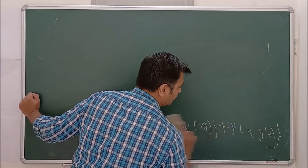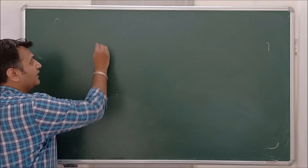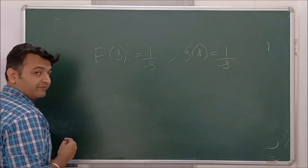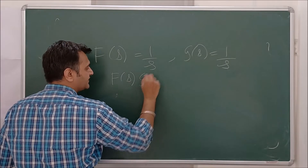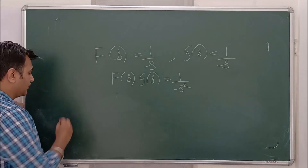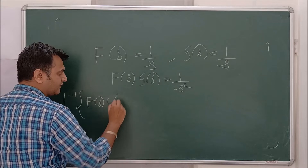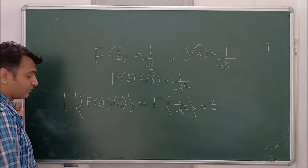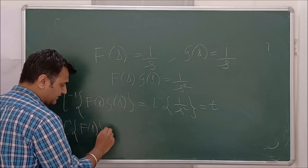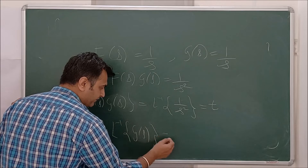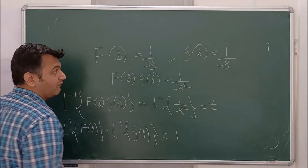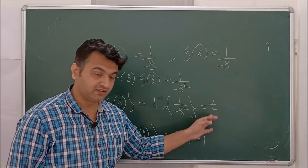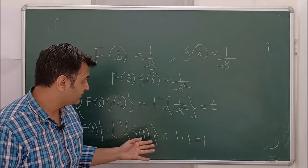Now, does Laplace inverse behave well with the product? The answer is no. As a counter-example, take F(s) = 1/s and G(s) = 1/s, so F(s)·G(s) = 1/s². Laplace inverse of F(s)·G(s) is Laplace inverse of 1/s², and we know Laplace of t is 1/s², so the answer is t. But Laplace inverse of F(s) times Laplace inverse of G(s) is Laplace inverse of 1/s times Laplace inverse of 1/s, which is 1 times 1 = 1. Since 1 ≠ t, they are not equal.